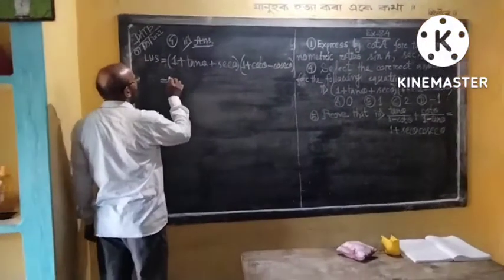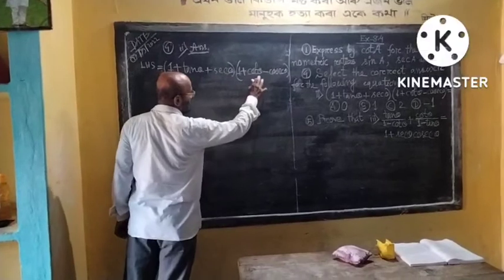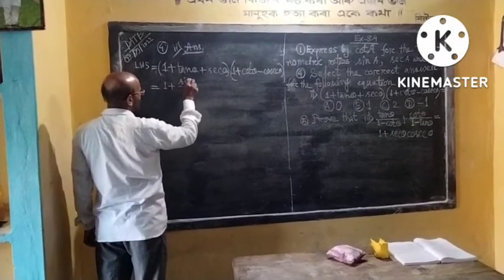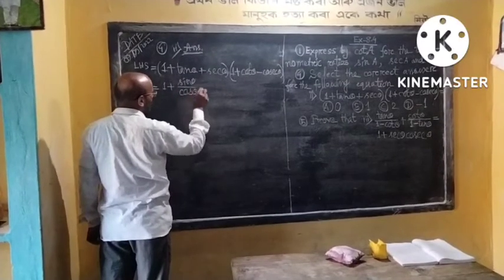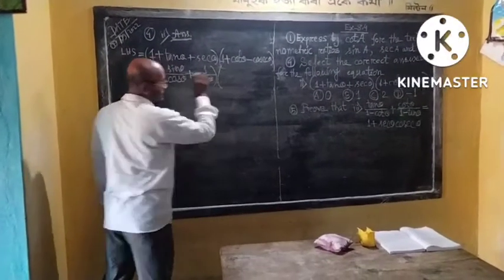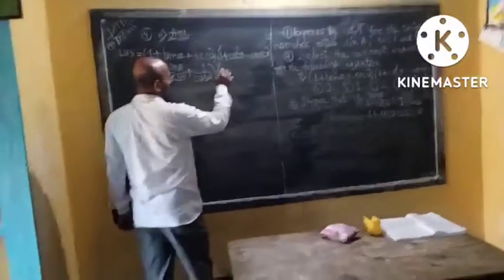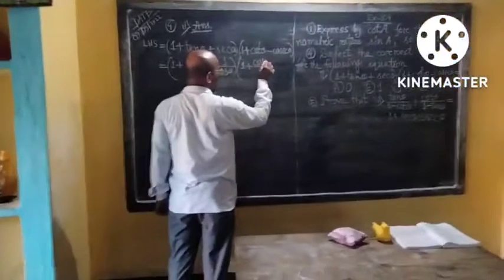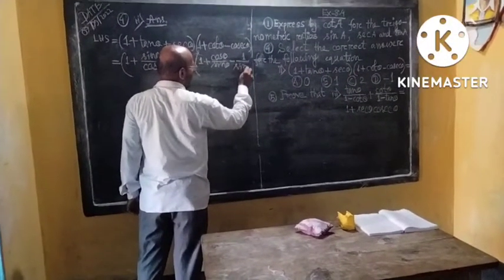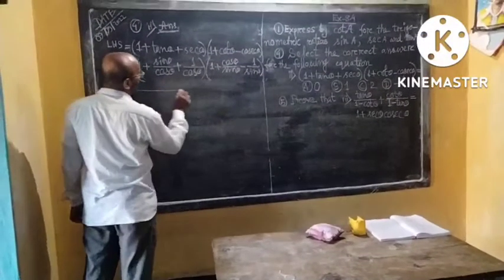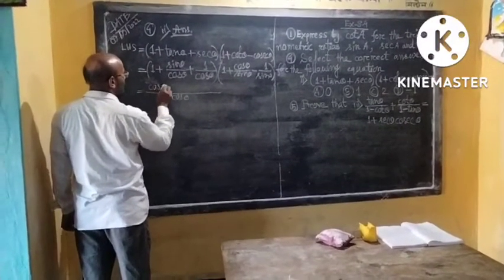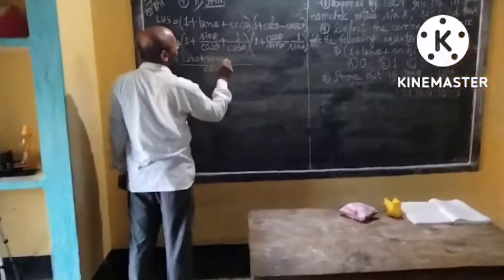Putting the left hand side: (1 plus tan theta plus sec theta)(1 plus cot theta minus cosec theta). We can write tan theta as sine theta by cos theta, plus sec theta as 1 by cos theta. Taking LCM, we have cos theta: cos theta plus sin theta plus 1.